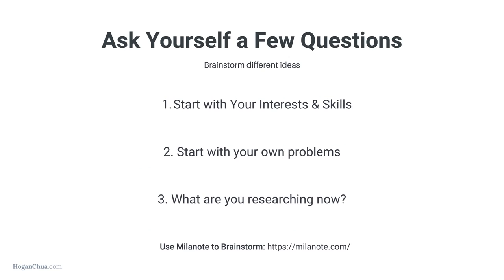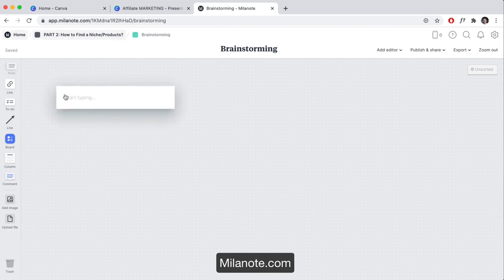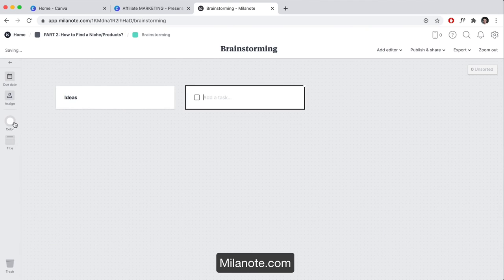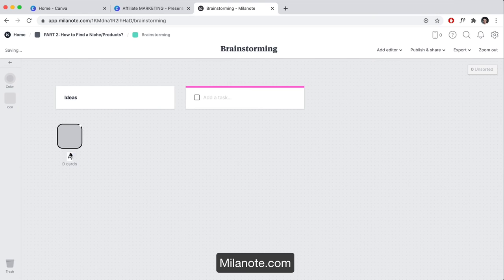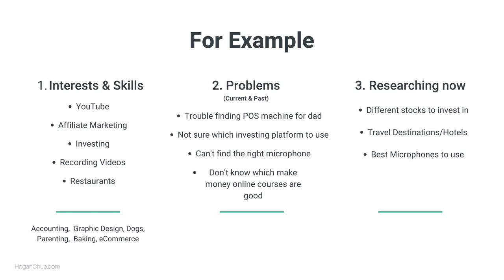The better your content, the more affiliate commissions you can make. There's no secret technique — you just need to become a better content creator. To find a niche, start brainstorming using an app called Milanote (free to sign up) or just a piece of paper. Start with things you're interested in, skills you currently have, current problems you're having, problems you've had in the past, videos you're watching, and blogs you're reading. Write it all down.